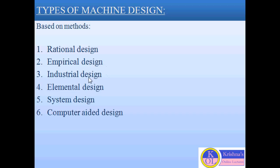The third type of design is industrial design. Industrial design is basically based on industrial facilities and aspects like production, market research, cost, technical approaches, standard design, different types of materials, etc.